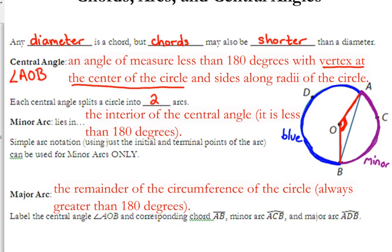Now, you can, I kind of breezed over it, but you could just name the minor arc. You can name it arc AB. You can just name it using the initial and terminal points.